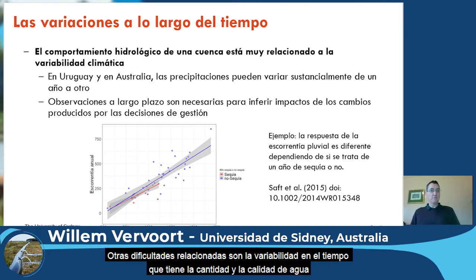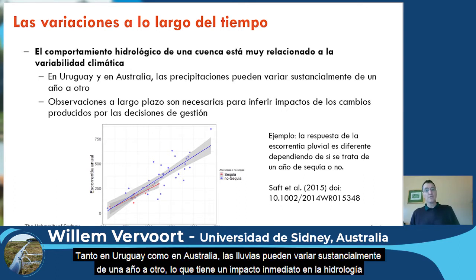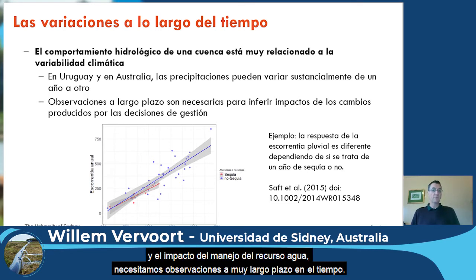The other difficulty we have with water quality and quantity is that there is also large variation in time. Because most of the hydrological behavior — most of the water movement — is actually strongly related to climate variability. Both in Uruguay and in Australia, rainfall can substantially vary from year to year, and this has an immediate impact on the actual hydrology. So if you want to say something about hydrology and the impact of management on water, you need observations at very long-term timescales.